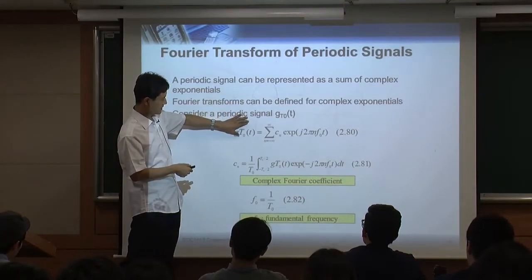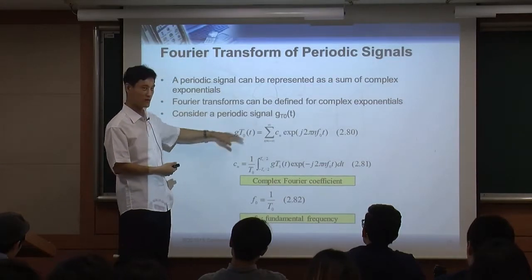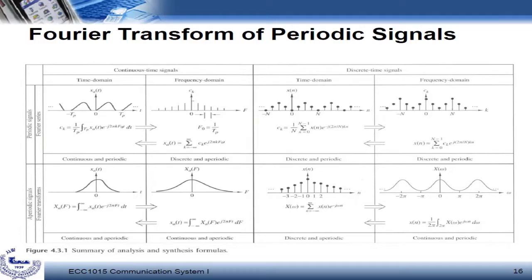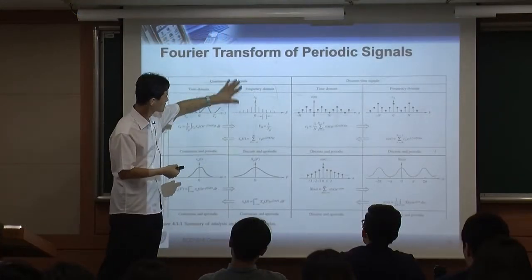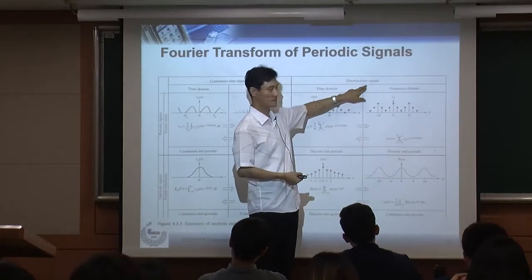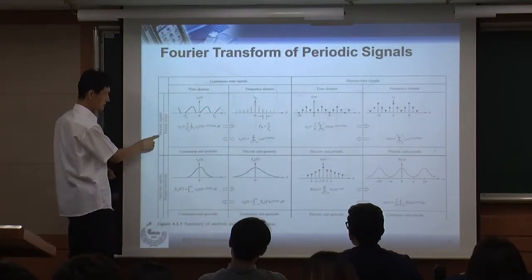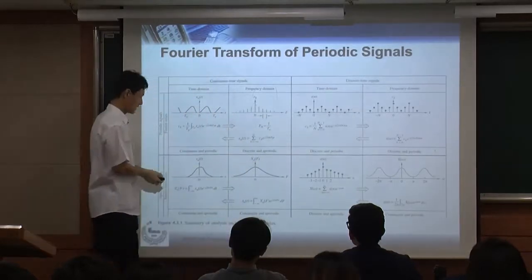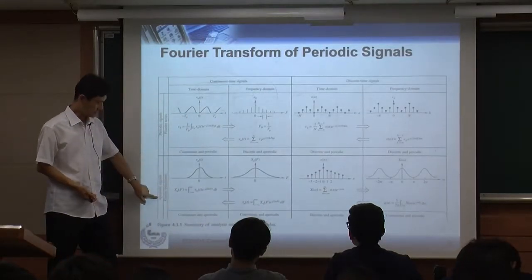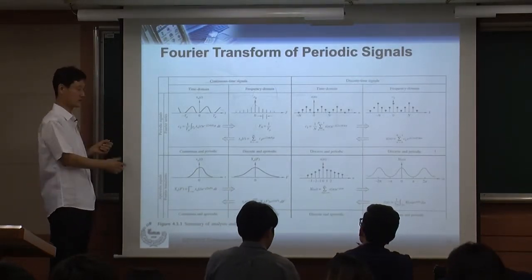This table summarizes the Fourier transform relationships well. The horizontal axis distinguishes continuous time signals (left) from discrete time signals (right). The rows distinguish periodic signals (top) from aperiodic signals (bottom). Aperiodic means not periodic — the signal has no period, it does not repeat.